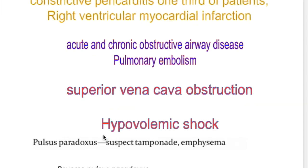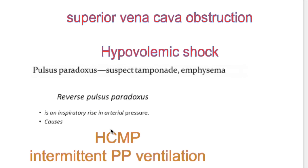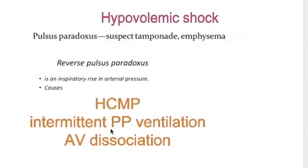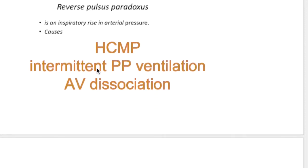Other causes of pulsus paradoxus include superior vena cava obstruction and hypovolemic shock. Reverse pulsus paradoxus is an inspiratory rise in arterial pressure, and it occurs in hypertrophic cardiomyopathy, intermittent positive pressure ventilation, and AV dissociation.